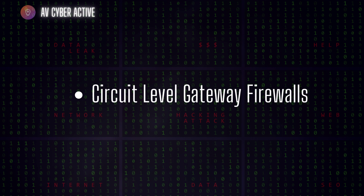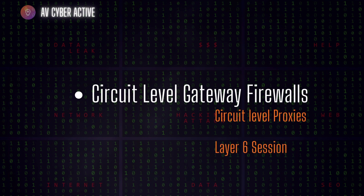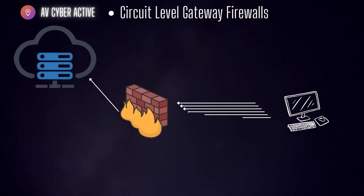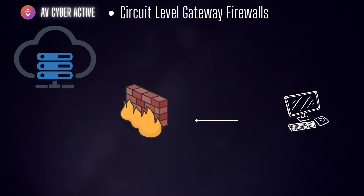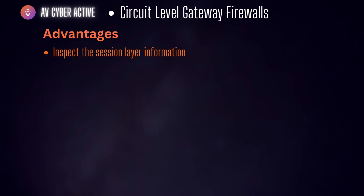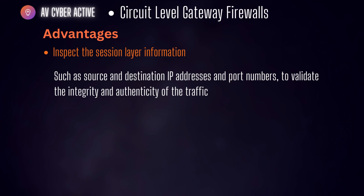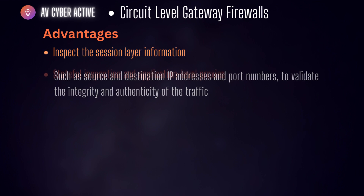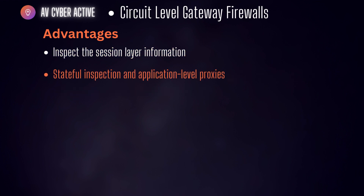Next, circuit-level gateway firewalls — also known as circuit-level proxies — are specifically designed to secure network connections at the session layer of the OSI model. These firewalls act as intermediaries between internal and external networks, ensuring that only authorized connections are established. They inspect session layer information such as source and destination IP addresses and port numbers to validate the integrity and authenticity of traffic. They also incorporate features like stateful inspection and application layer proxies, enabling deeper inspection and mitigating risk from various attack vectors.